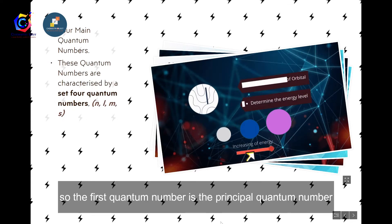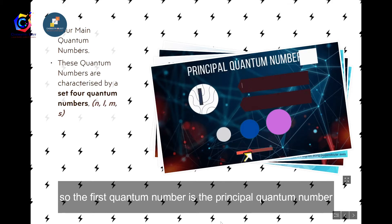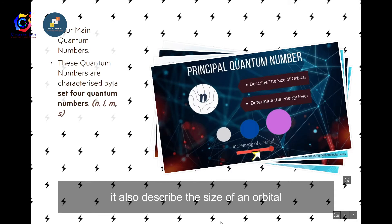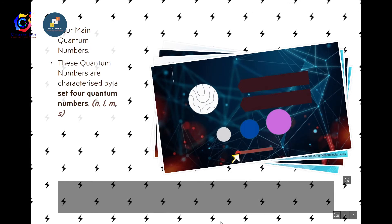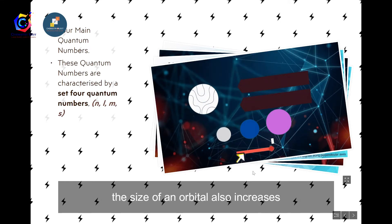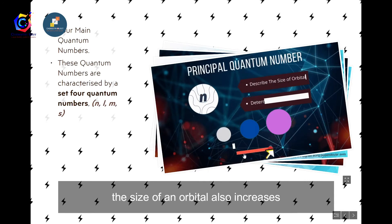The first quantum number is the principal quantum number (n), which describes the shell or energy level of an atom. It also describes the size of an orbital, which correlates with the energy level — meaning that as the energy level increases, the size of the orbital also increases.